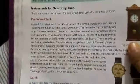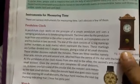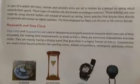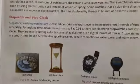Next topic is instruments for measuring time. There are various instruments for measuring time, such as pendulum clock, watch, stopwatch, and clocks. Let us see stop clocks and stopwatches. What are they?